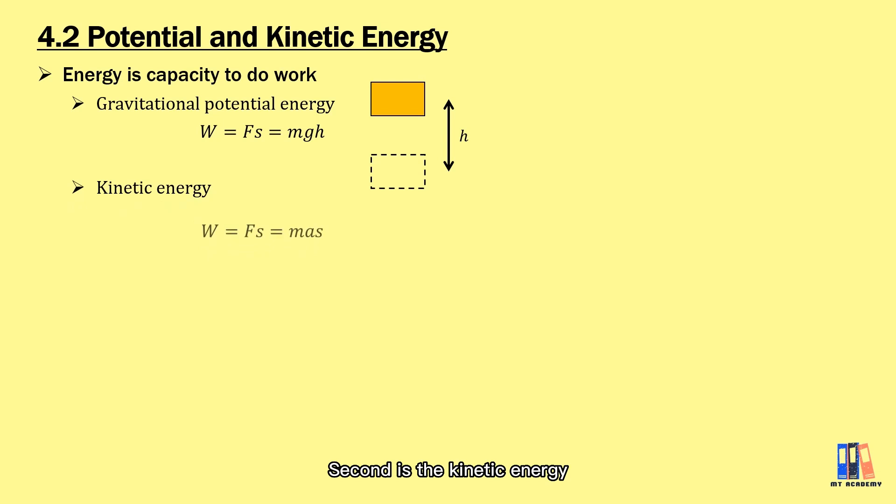Second is the kinetic energy. We also start from the formula W = Fs where F = ma. From the linear motion equation v² = u² + 2as, we can do the substitution here to obtain the kinetic energy as W = ½m(v² - u²).